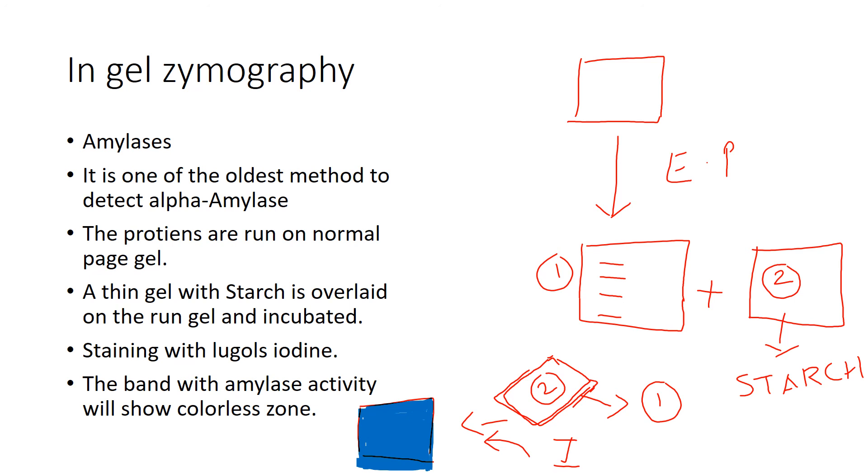The next is for gelatinases. Gelatinase detection is the same. In this gel, we will add gelatin because gelatin is the substrate. This is one more example where you can detect gelatinases by using this method, and again the staining is with Coomassie Brilliant Blue.